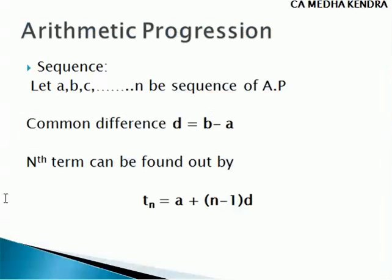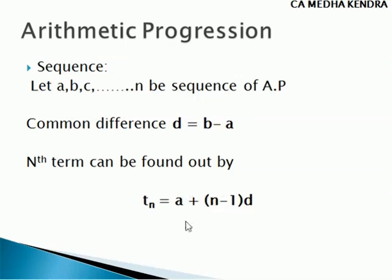Now let us look at arithmetic progression in a little more detail. For a sequence A, B, C, etc. up to N, the common difference D is second term minus first term, i.e., B minus A. The Nth term can be found using the formula TN equal to A plus (N minus 1) into D, where TN is the Nth term, A is the first term, D is the common difference, and N is the term we need to find. This formula can be rearranged to find common difference, Nth term, or first term depending on the values provided.